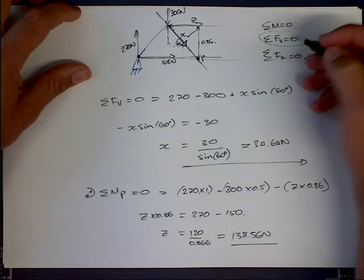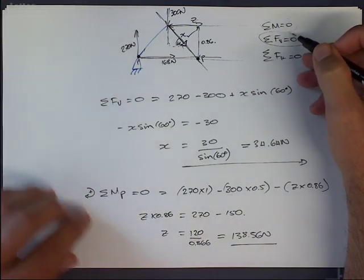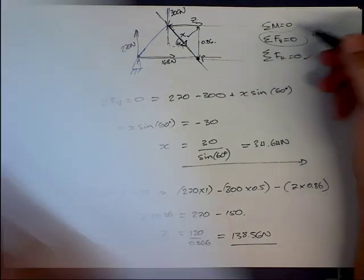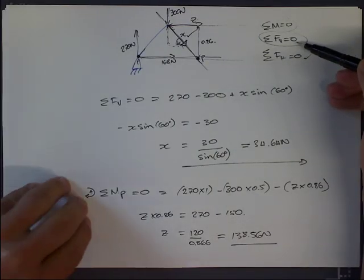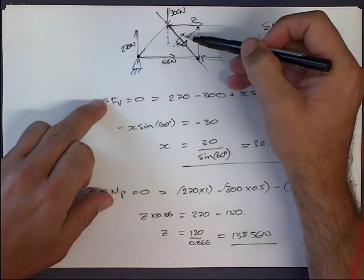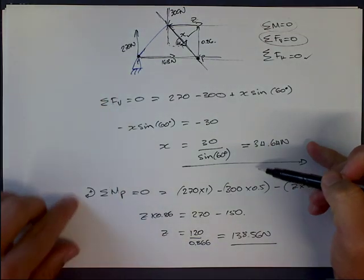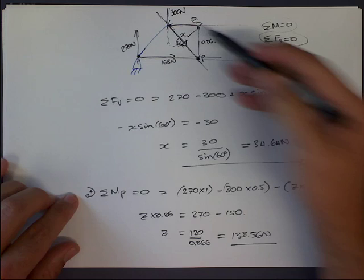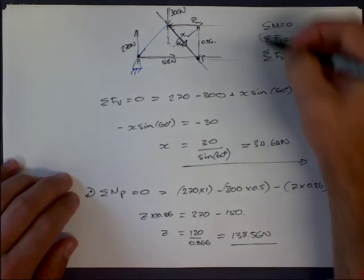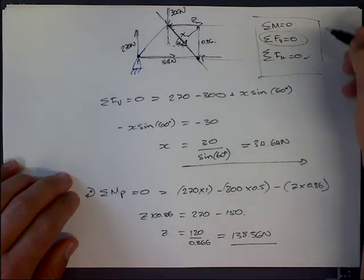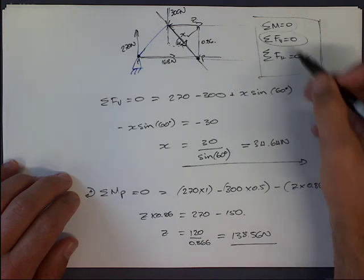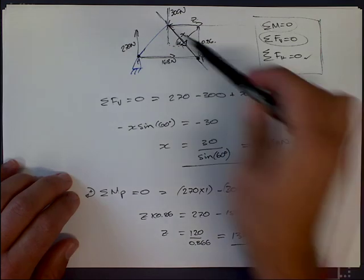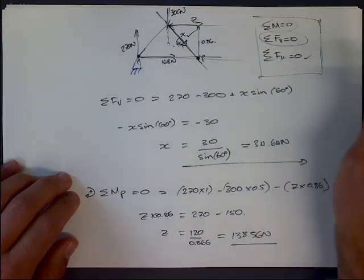We've now used moments both the first time to calculate y, then we used sum of vertical components to calculate our answer for x, and then we again used moments to calculate z. This is the hardest part of these kinds of problems: you need to choose in your brain which one of these different rules you're going to use to solve the problem.